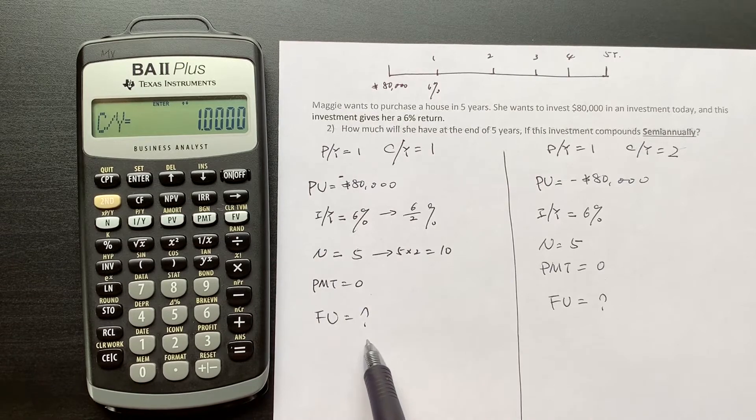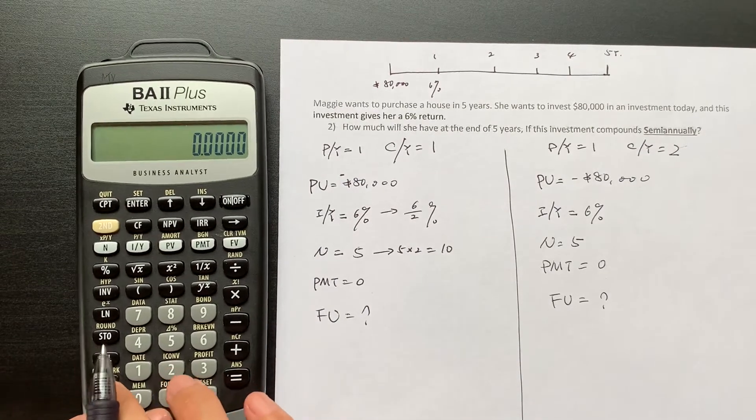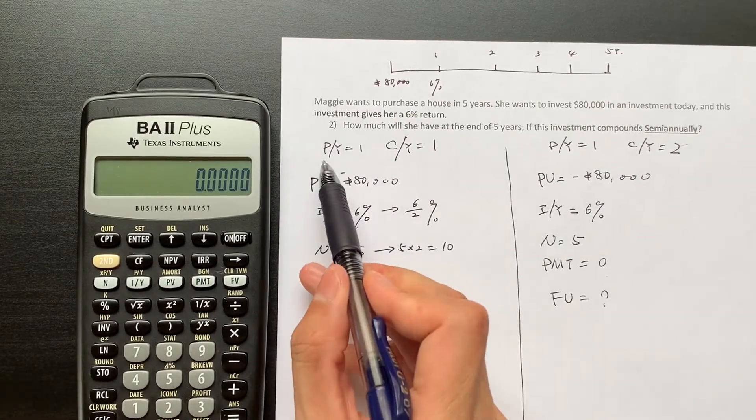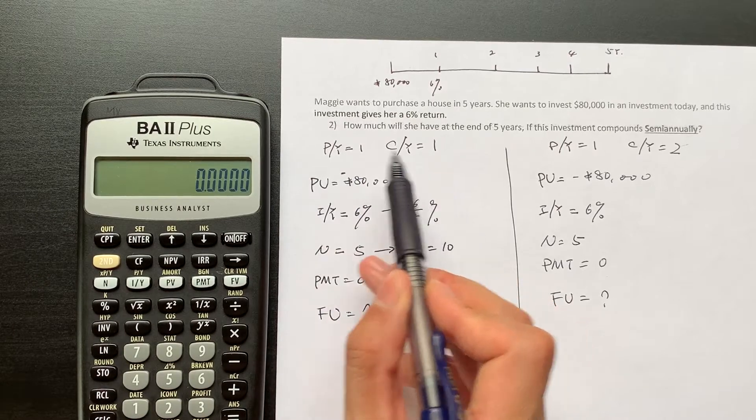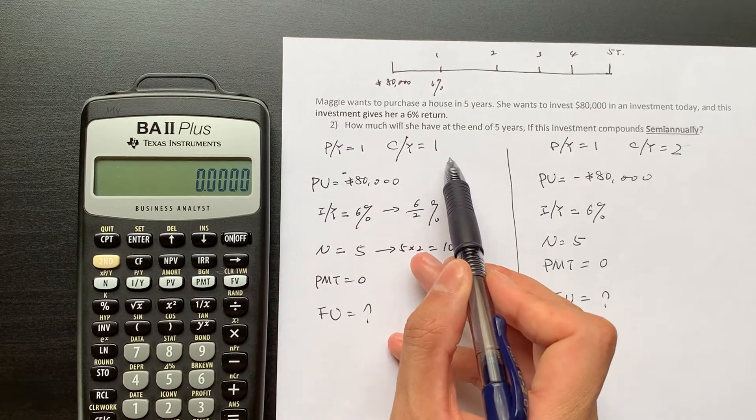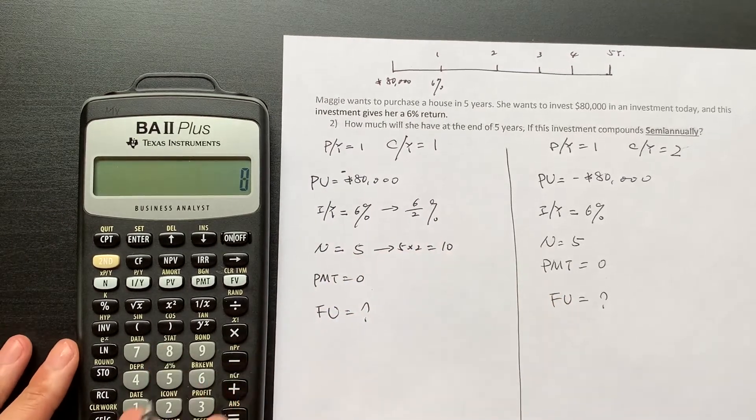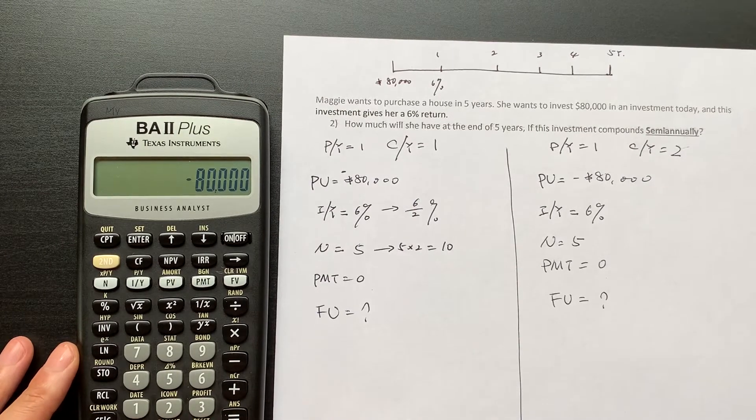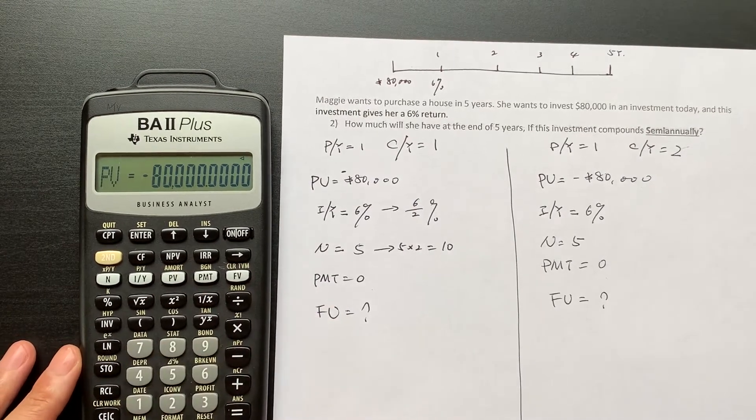So PMT is equal to zero. Then the future value, we want to find the future value. So make sure your calculator is in basic mode, PY equal to one, CY equal to one. So we can do this: 80,000 dollars, it's money out, the present value.